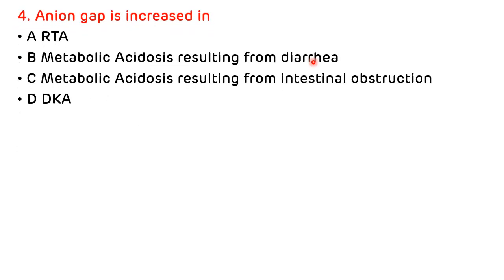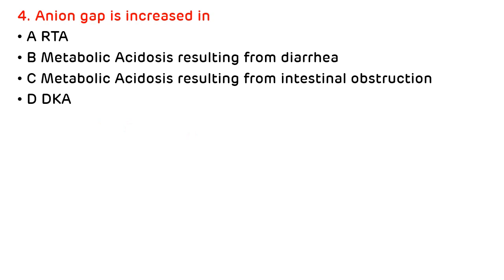Question 4: Anion gap is increased in — A) renal tubular acidosis, B) metabolic acidosis resulting from diarrhea, C) metabolic acidosis resulting from intestinal obstruction, D) diabetic ketoacidosis. Options A, B, and C are causes of normal anion gap metabolic acidosis. The correct answer is D — diabetic ketoacidosis — in which the anion gap is increased.